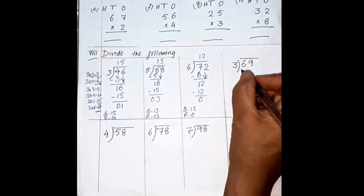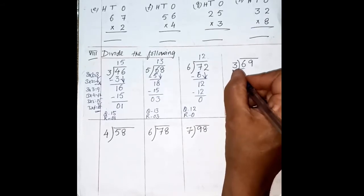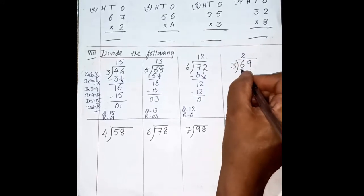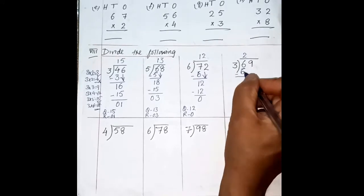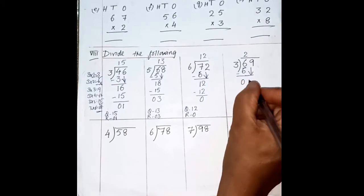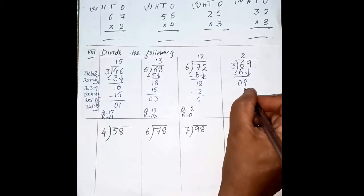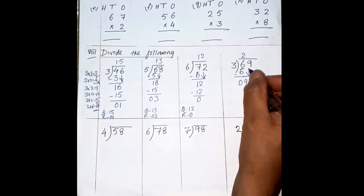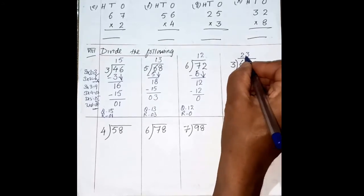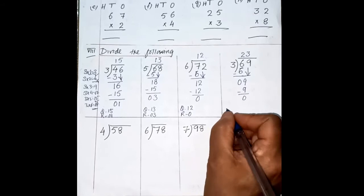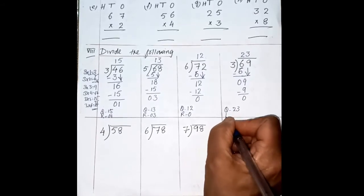Let me show you another sum. Now look here — 6 is here, so read the table of 3. 3 ones are 3, 3 twos are 6 — so it is going 2 times: 3 twos are 6. Now 6 minus 6 is 0. Bring down the next number besides 0. Now your number is only 9. Read the table of 3 again: 3 ones are 3, 3 twos are 6, 3 threes are 9 — so it is going 3 times: 3 threes are 9. 9 minus 9 is 0. Your quotient is 23 and the remainder is 0.